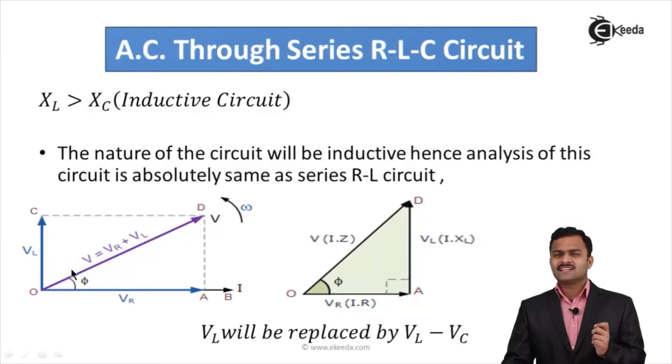Whatever discussion we have done for RL circuit holds true for this circuit, only thing is that Vl needs to be replaced by Vl minus Vc. All phasor diagrams will be identical to that of RL circuit. Impedance triangle will be identical to that of the inductive circuit. This is case number one.